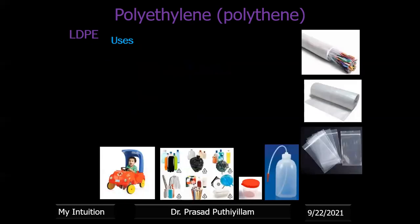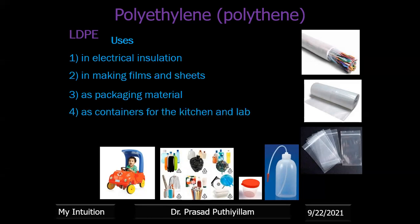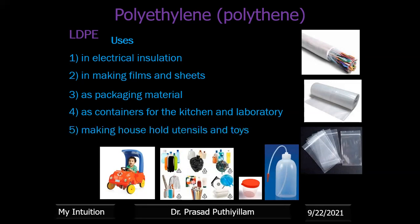In the presence of UV light or high concentration of oxygen, polyethylene loses its natural character, starts degrading, and cracks develop. Uses of LDPE include electrical insulation, making films and sheets, packaging material such as zip-lock covers used in research, water bottles, laboratory wares, kitchen wares, utensils, and toys.